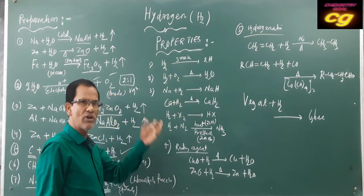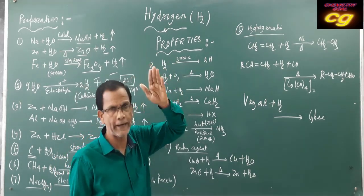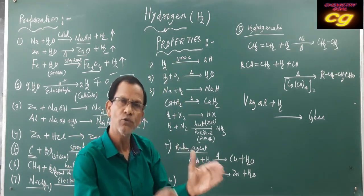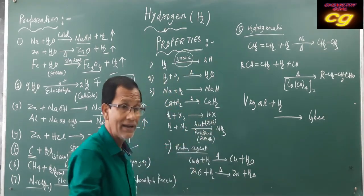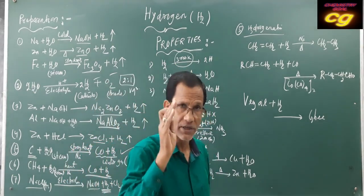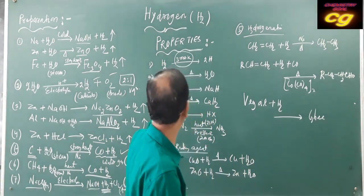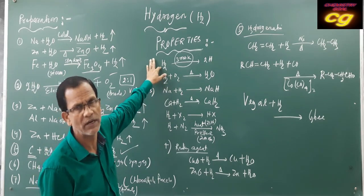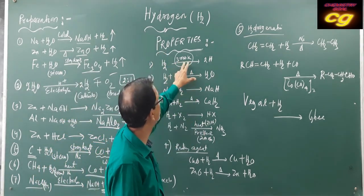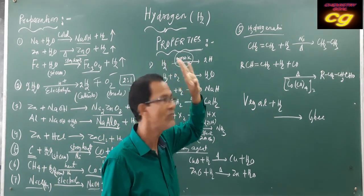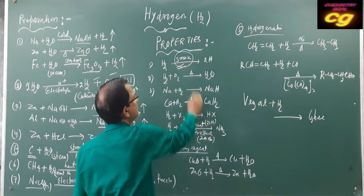When hydrogen gas is very strongly heated to about 5000 K, it is converted to atomic hydrogen. Hydrogen has the smallest atom and very strong bond dissociation energy — the highest bond dissociation energy among all elements. That is why a very high temperature is required to convert dihydrogen to atomic hydrogen.